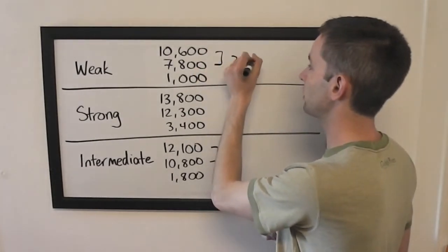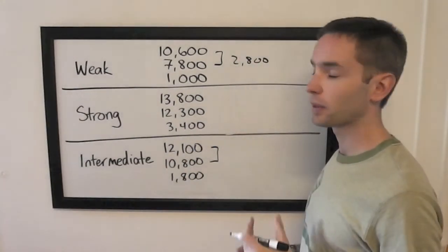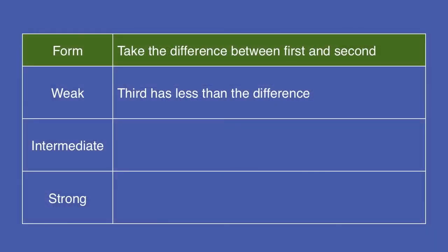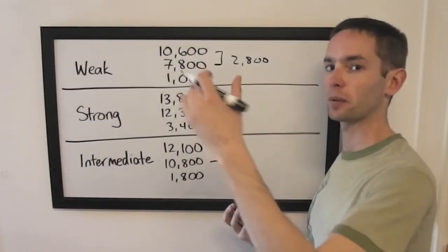Here the difference between these two is 2,800, which is more than what third place has. If third place doesn't have the difference between first and second, he's eliminated. First won't fall far enough for third to be able to catch him.